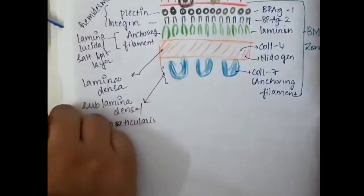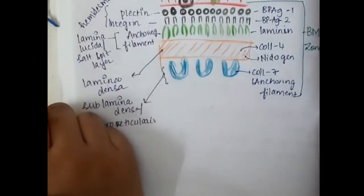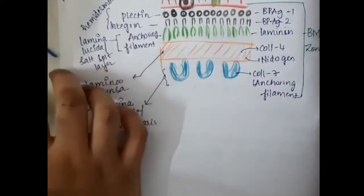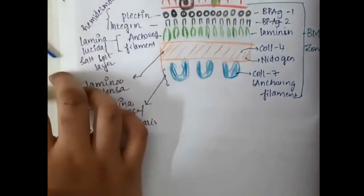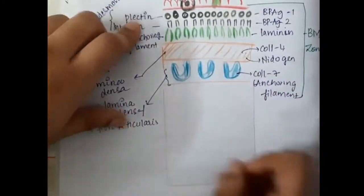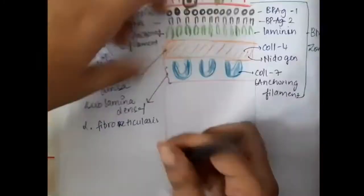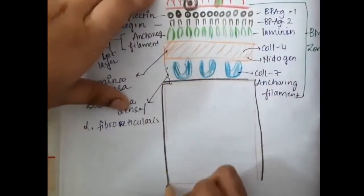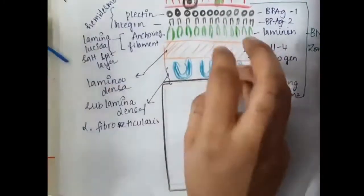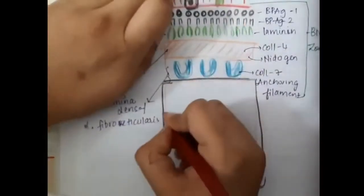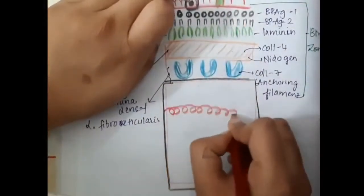So the basement membrane zone contains hemidesmosomes, lamina lucida or salt split layer, lamina densa, and sub lamina densa. Below that we have the dermis.